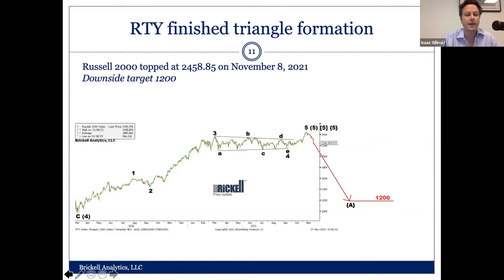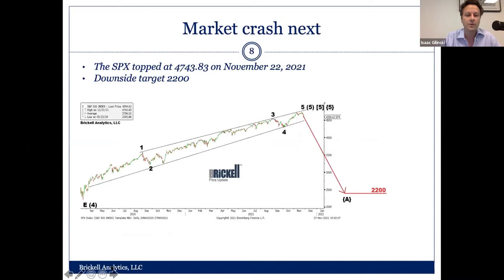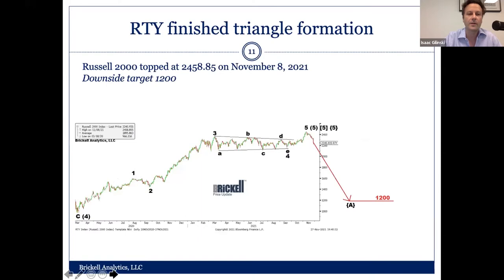Going back to our S&P chart, we think the S&P topped in November and it's on its way down — to revisit the COVID lows of 2200. The VIX is going to start to break out higher and also visit the COVID highs of 85. The Russell 2000 topped at about 2500, and then it's going to start to decline to about 1200.